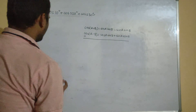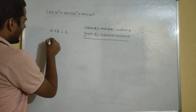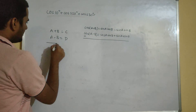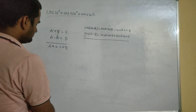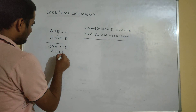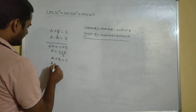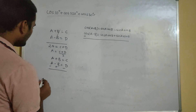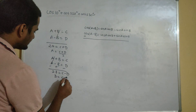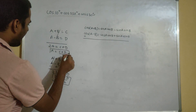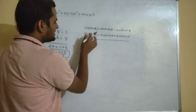Let me take the assumption that A plus B equals C and A minus B equals D. If I add them, B cancels and I get 2A equals C plus D, so A equals (C+D)/2. If I subtract them, A cancels and I get 2B equals C minus D, so B equals (C−D)/2.